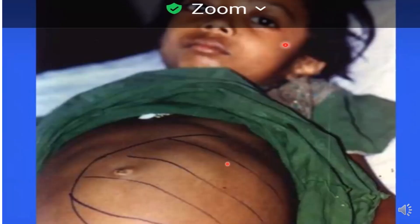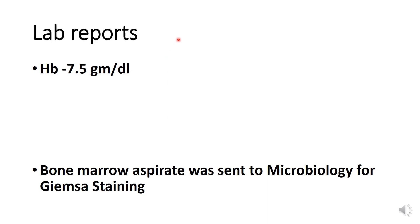You can see the huge splenomegaly and on physical examination it was felt 6 cm below the costal margin. Routine investigations were done and in that hemoglobin was quite low, 7.5 gram per deciliter, and pancytopenia was also there.